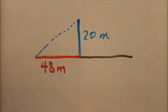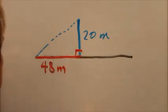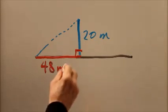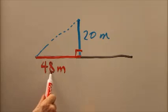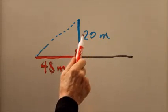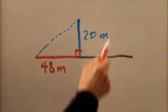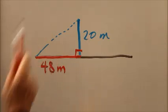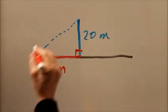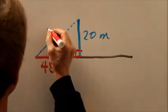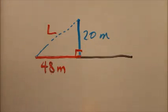Because this pole is vertical and the field is horizontal, we know that that's a right angle, so we've got a right triangle. According to the Pythagorean theorem, if we square this, square that, add the two squares and then take the square root of the result, we're going to get this length here which we can call L.